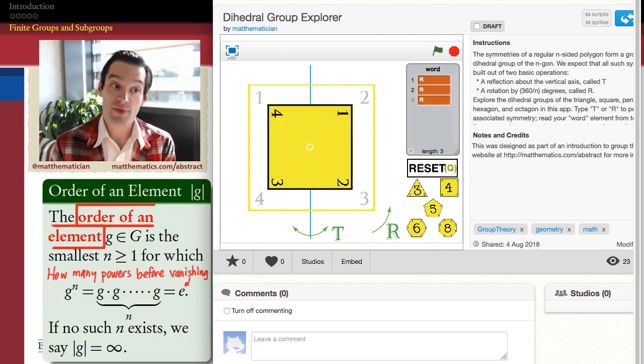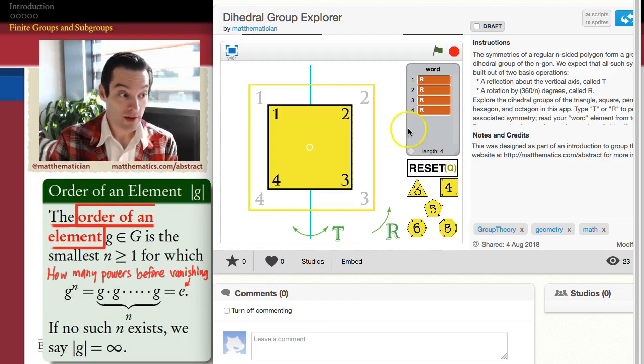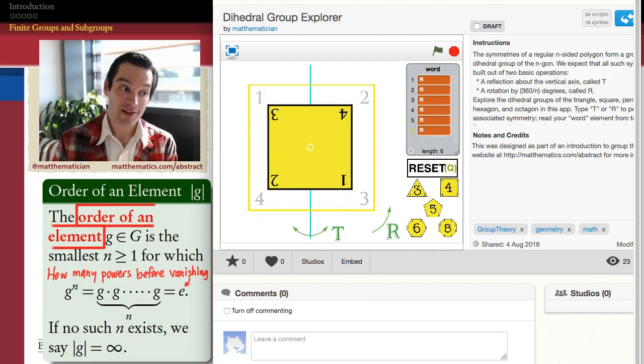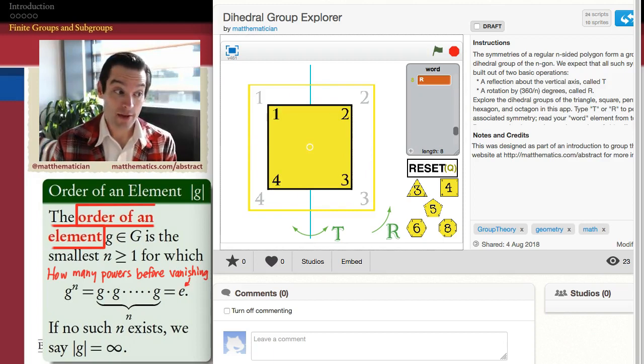It's when I do it a fourth time that now I've arrived back where I started. So for the rotation element in this dihedral group, four iterations of it, the fourth power of it, comes back to the identity. The fifth is not, the sixth is not, the seventh is not, the eighth is.